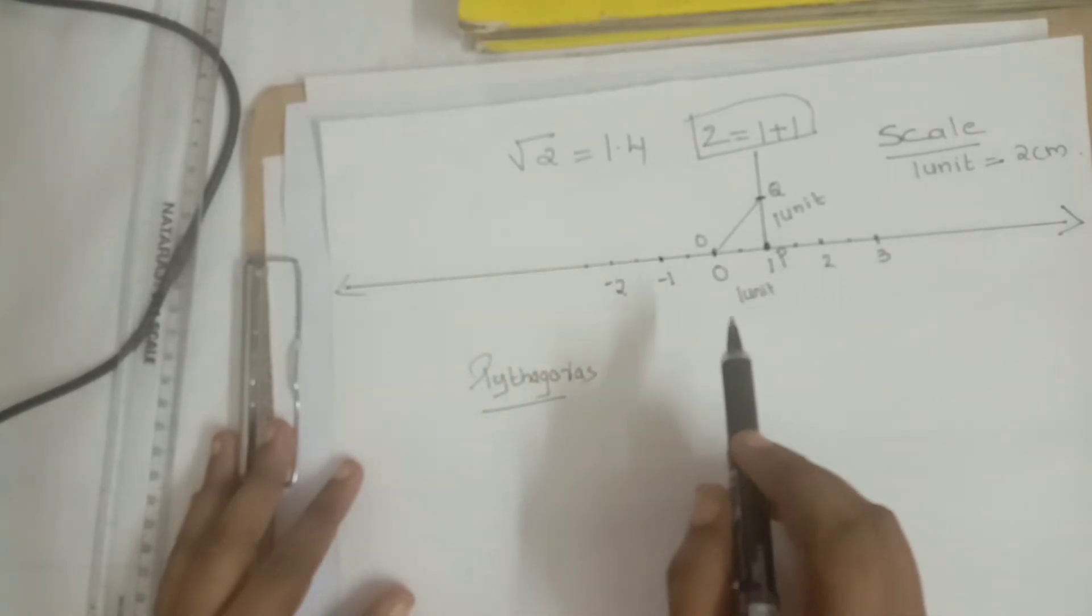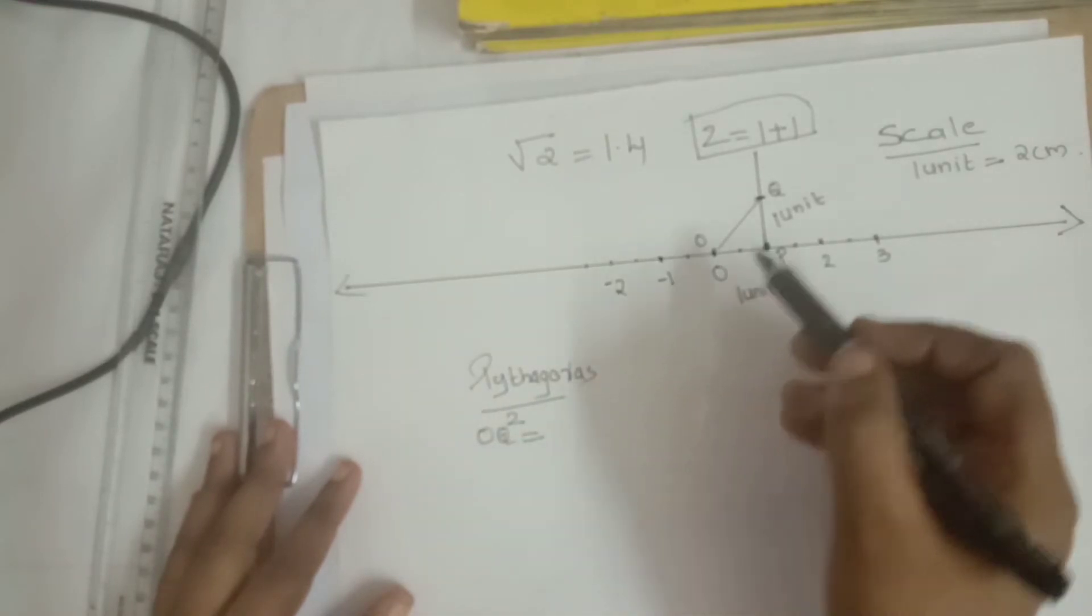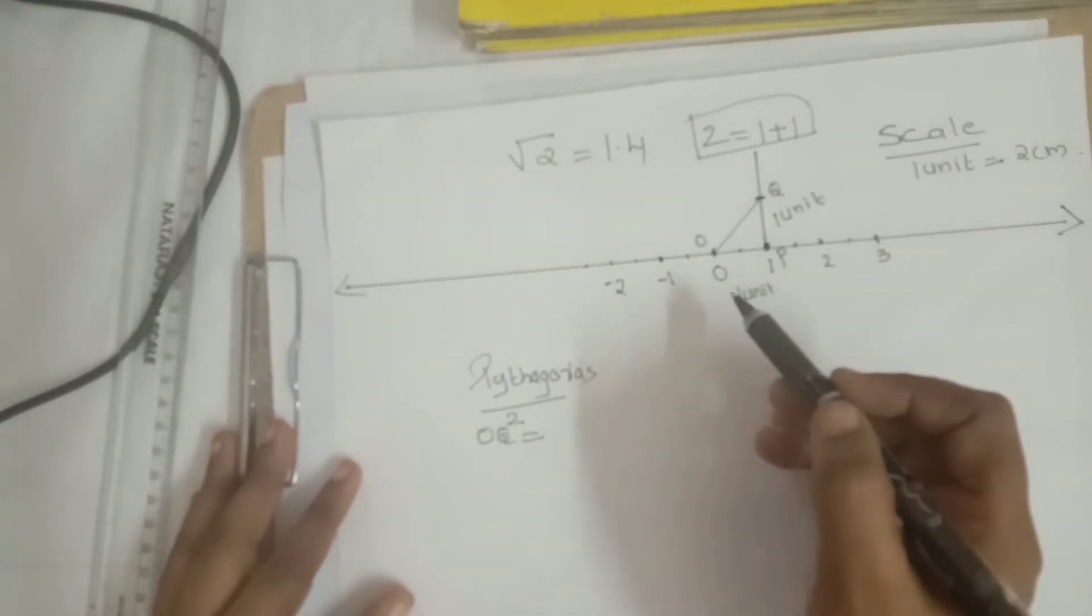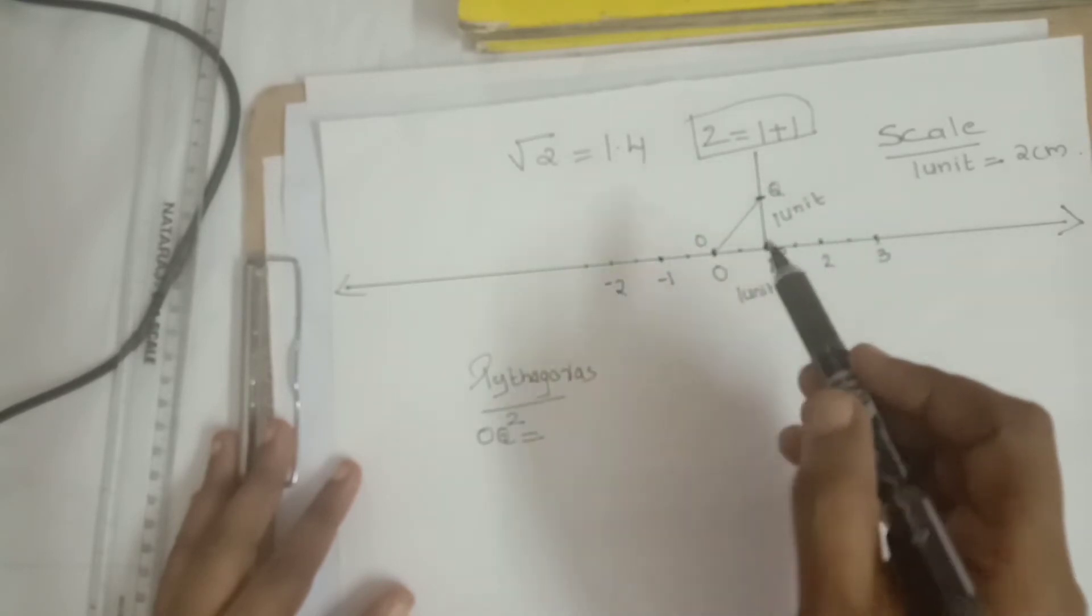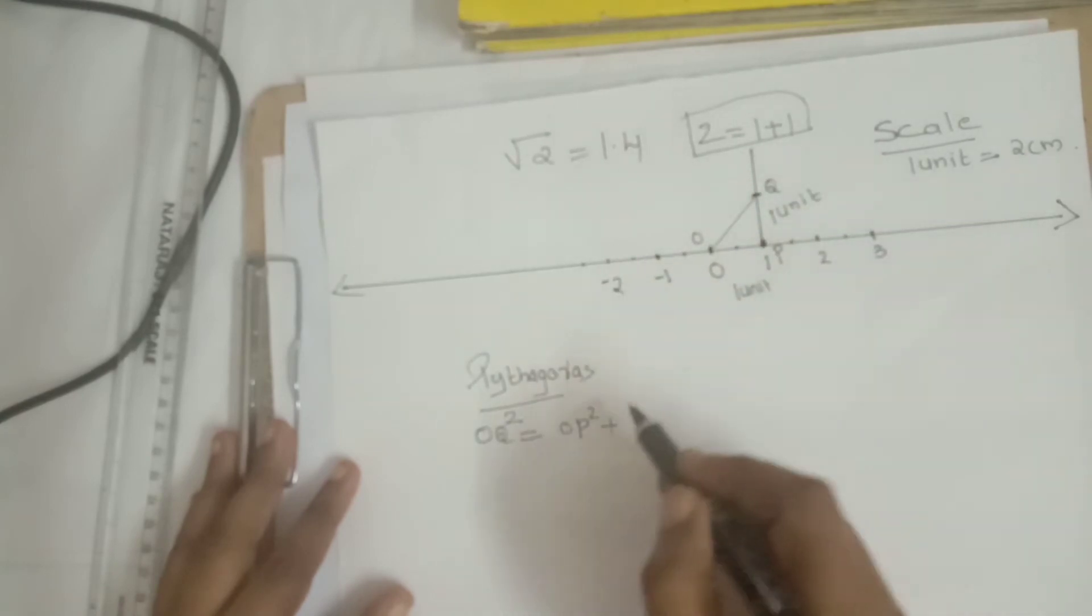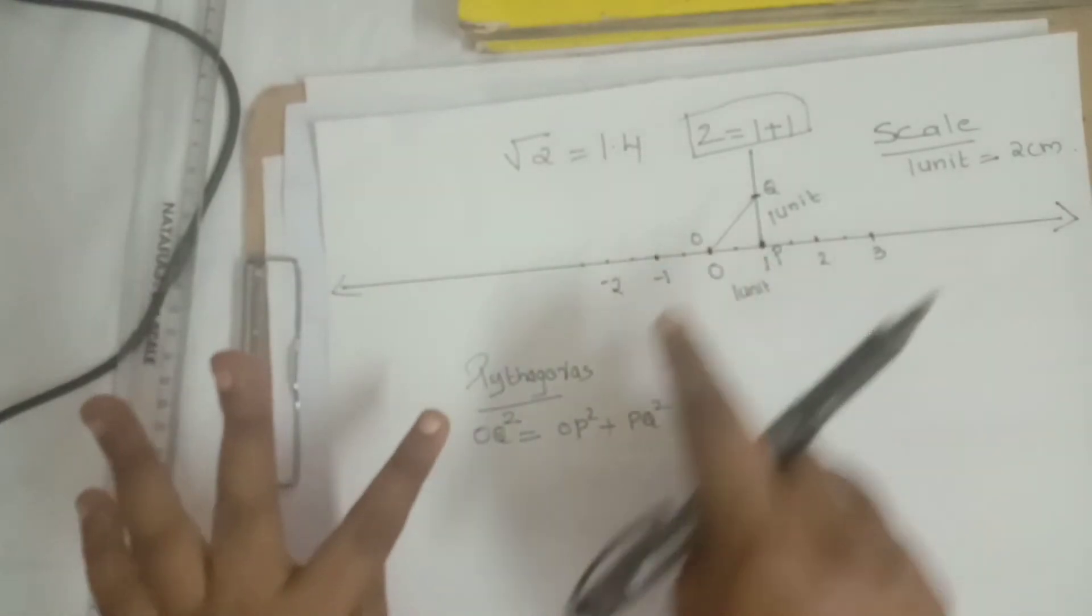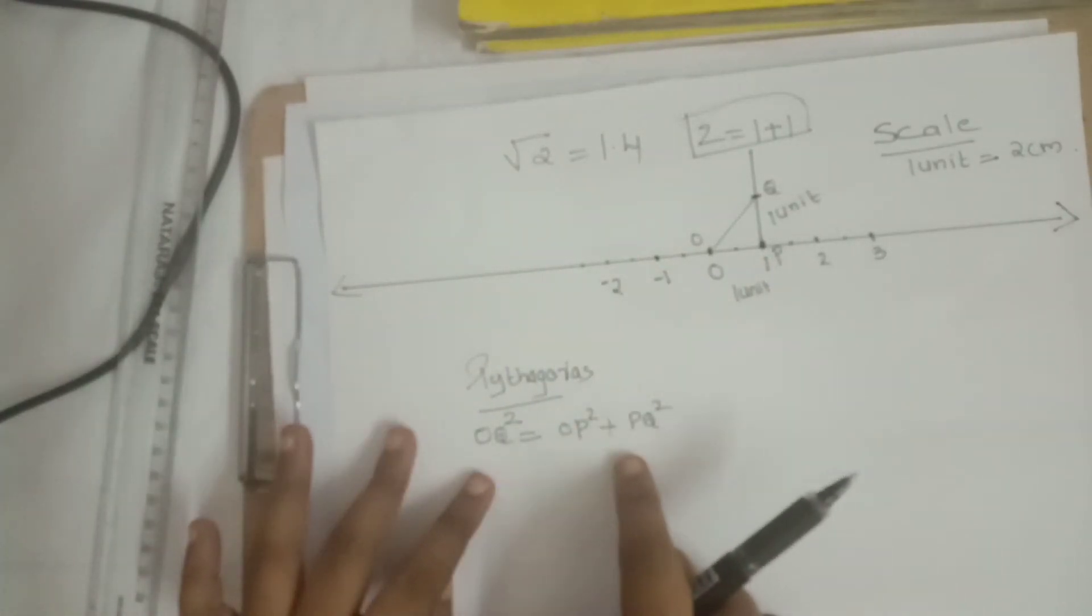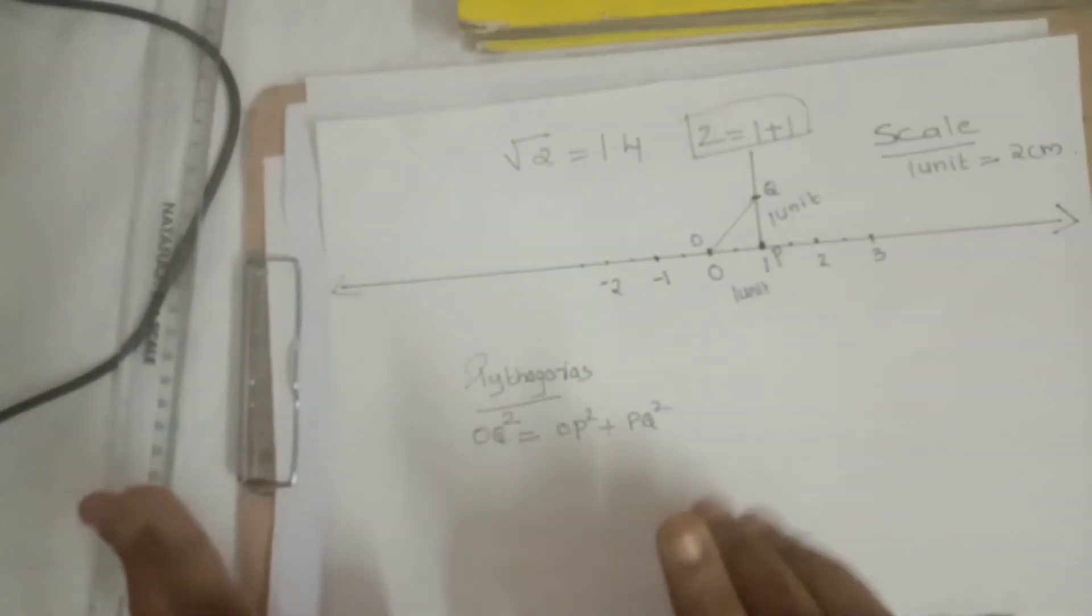Then Pythagoras states that the longest side squared—that is, longest side OQ—that square is equal to sum of OP side and PQ side squared. So base is OP, base squared plus altitude squared. Altitude represents PQ, that altitude squared. That means longest side square equals the sum of the square of the other two sides. That is the Pythagoras theorem.